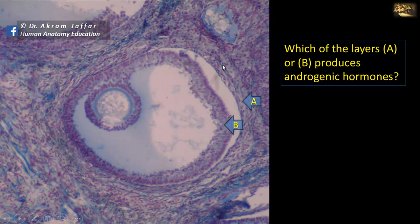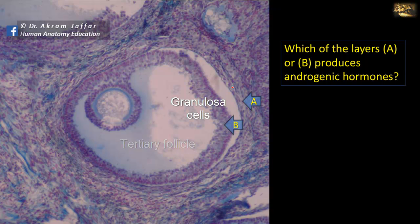Which of the layers, A or B, produces androgenic hormones? This is a mature Graafian follicle — a tertiary follicle — showing granulosa cells and theca cells. It is the theca cells that produce the androgenic hormones, which are then converted into estrogen by the granulosa cells.